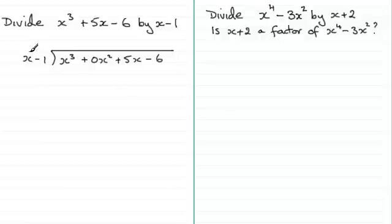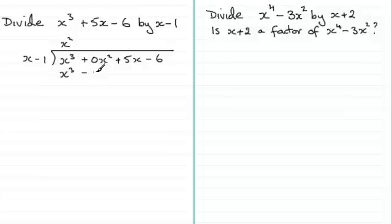We'll run through this very quickly. What do we have to multiply x by to get x cubed? Well, it's going to be x squared. So x squared times x gives us x cubed, and x squared times minus 1 is minus x squared. We subtract to find the remainder: x cubed minus x cubed is 0, and 0x squared minus minus x squared gives us plus x squared.